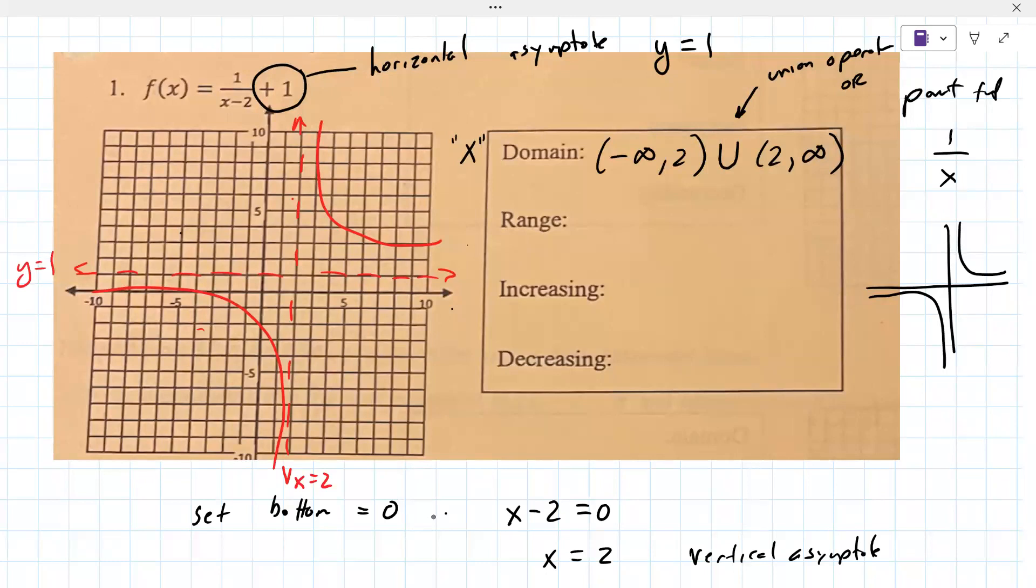The range is typically broken apart by the horizontal asymptote. The range is the y values. It goes down forever up to positive one. You can think of like this going down forever and then on the other side it goes up forever.